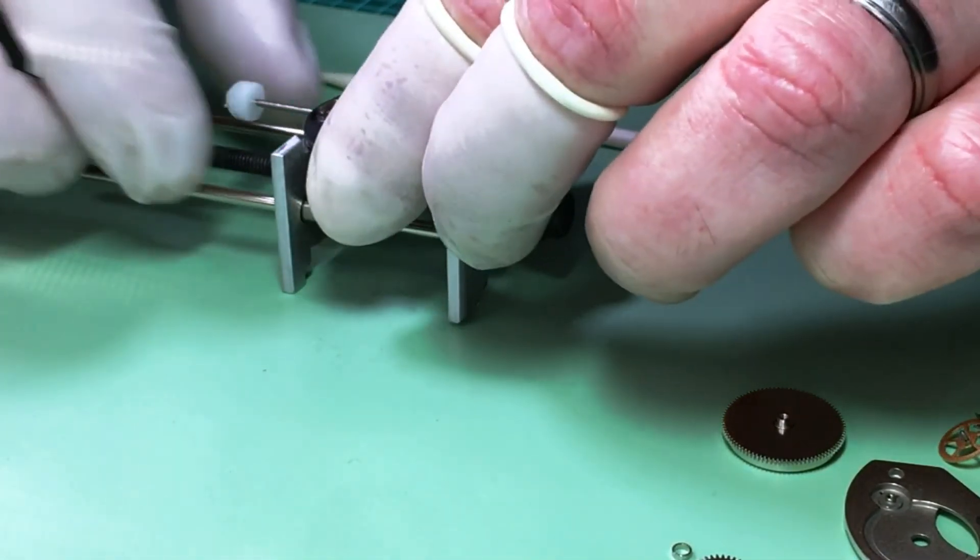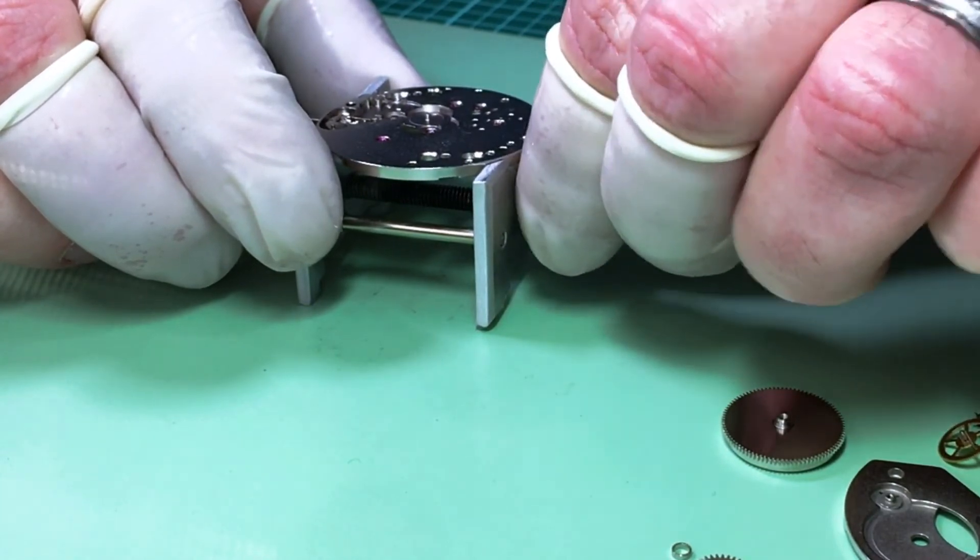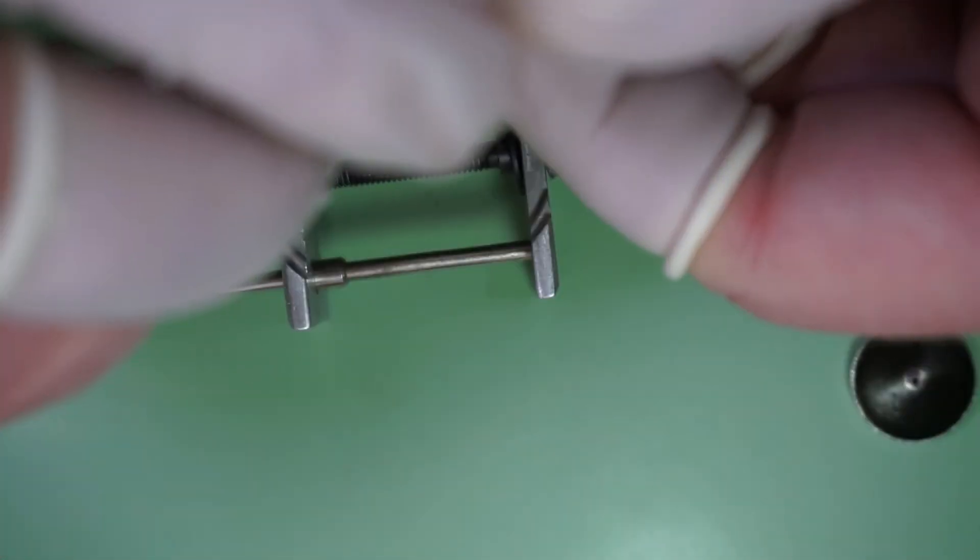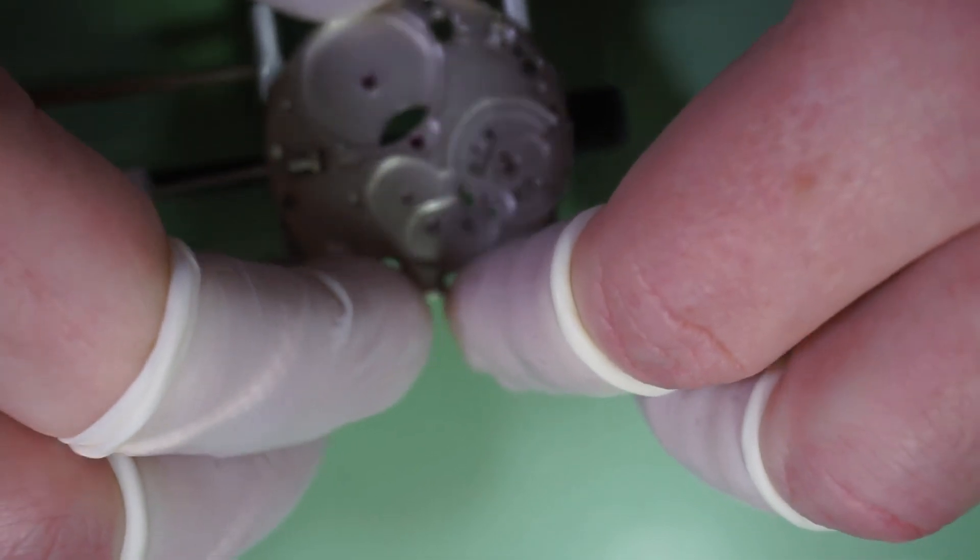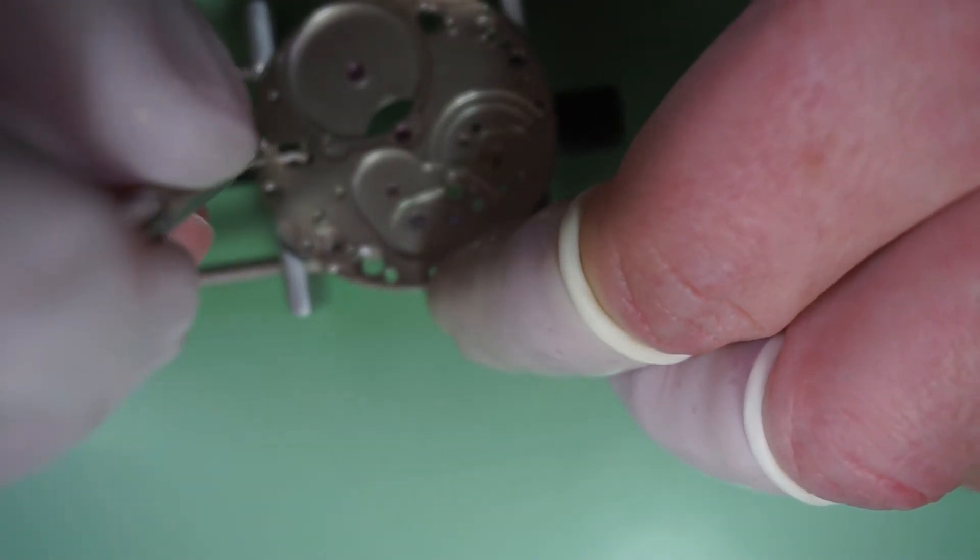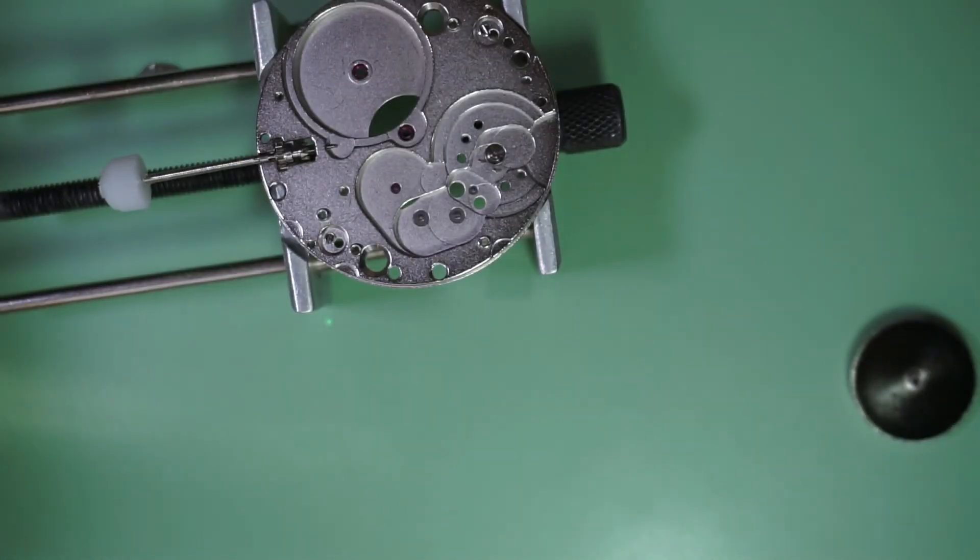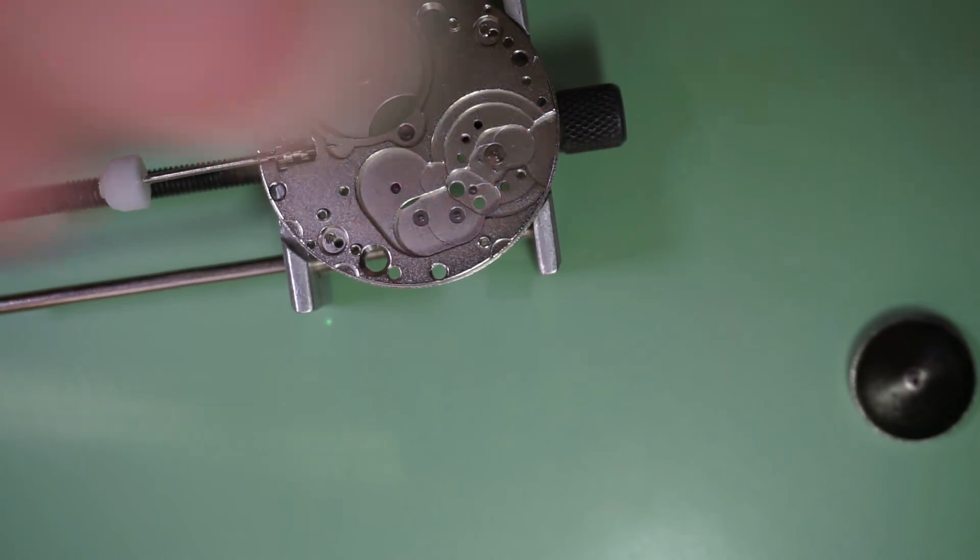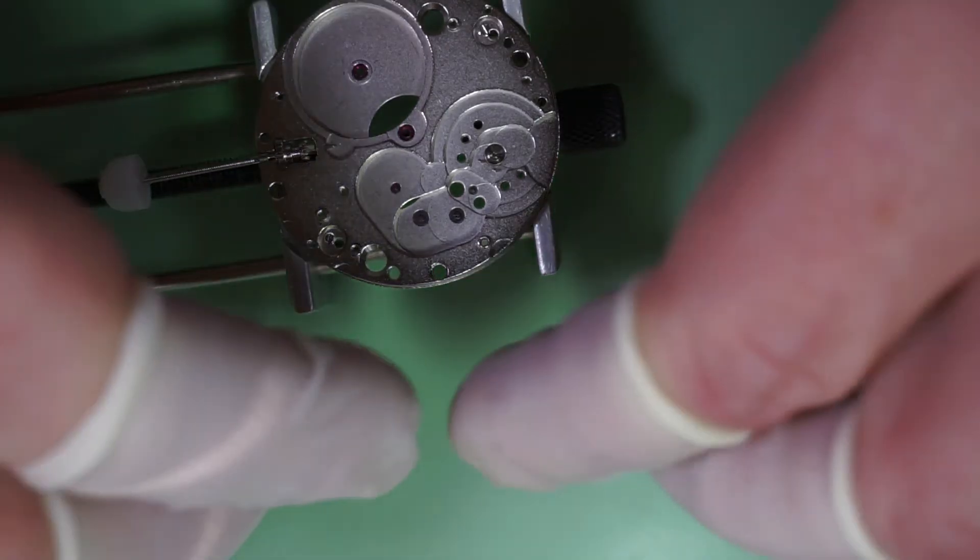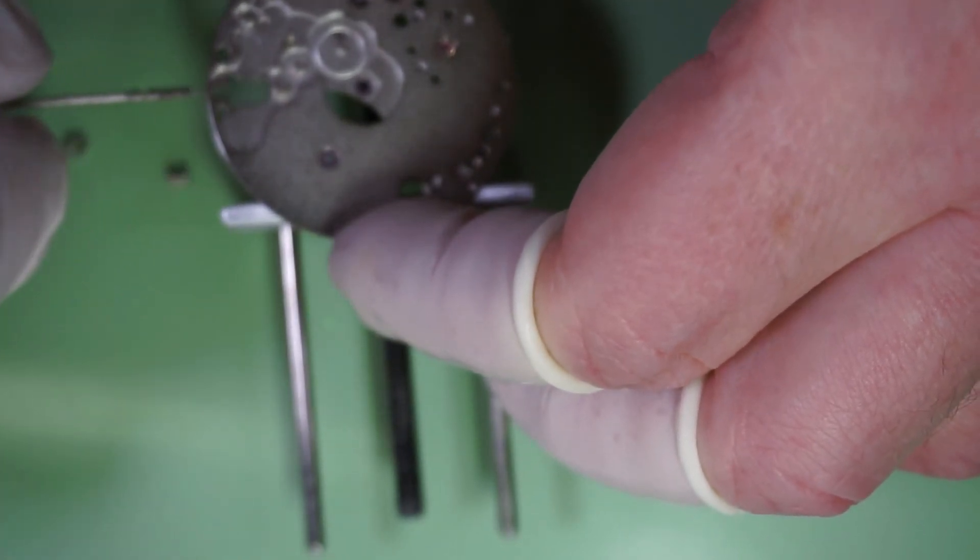And next I'm going to release the setting lever screw. And that will allow the setting lever to fall to the bench. So in order to get to that screw, you've got to flip the movement over again. And it's a teeny tiny little screw. Right there, right next to the setting lever. And this is the setting lever. And I'll flip it over again. And I will remove the setting lever, or the stem, the winding stem.